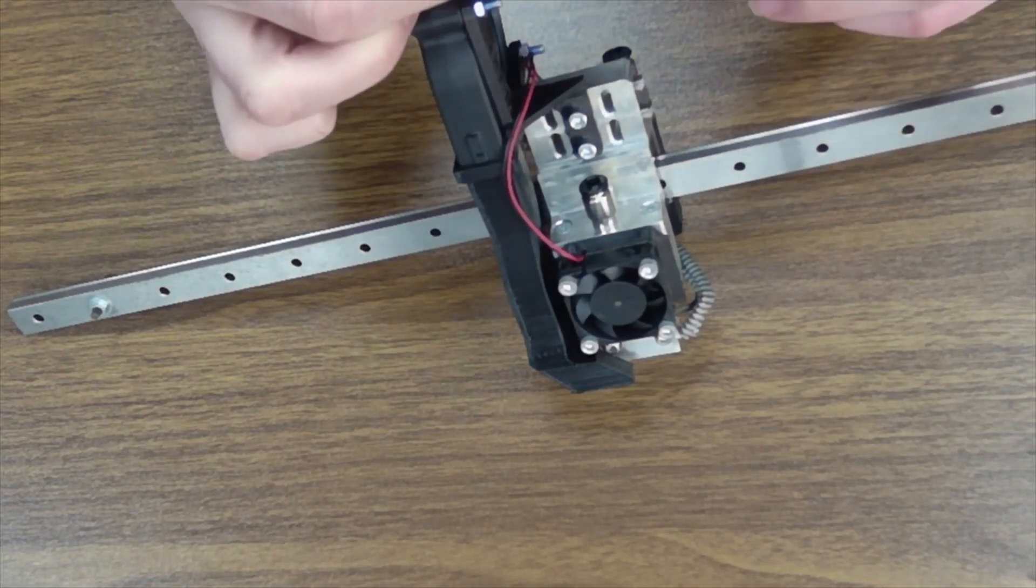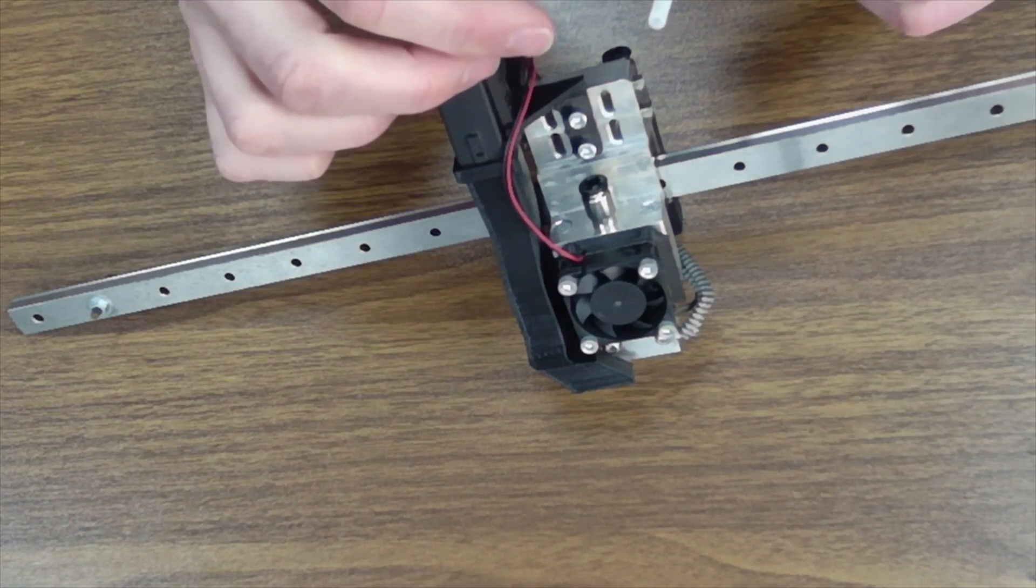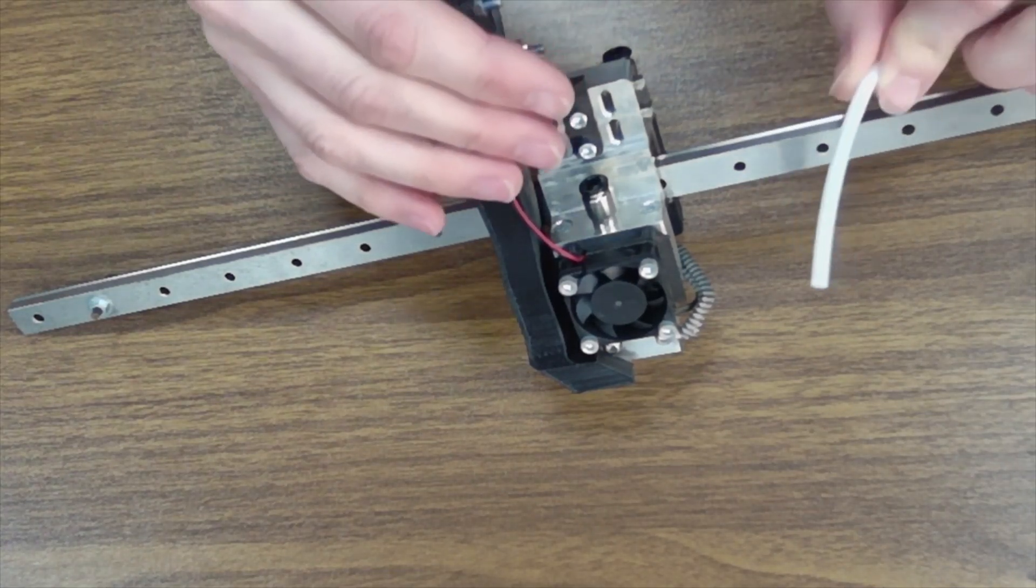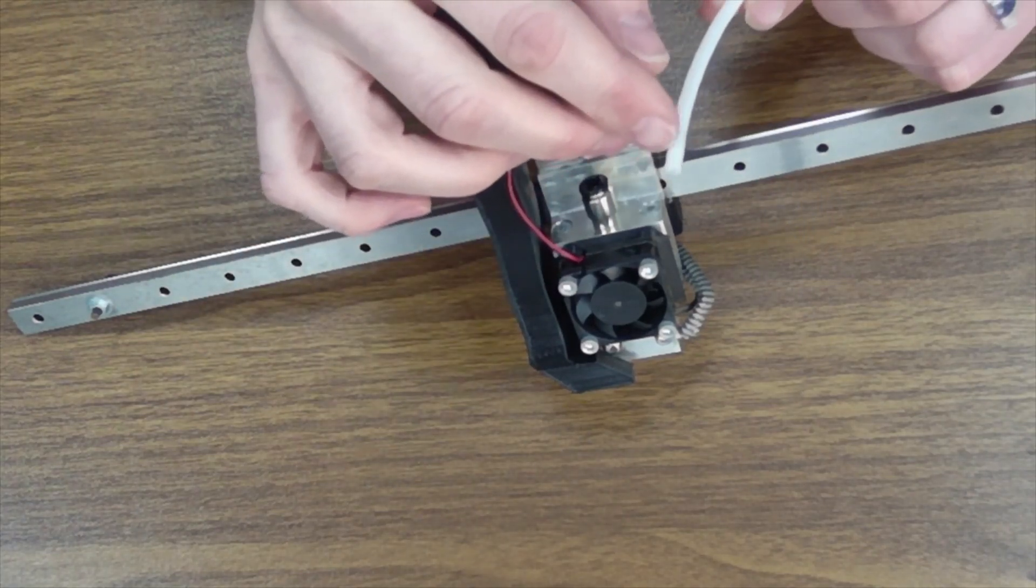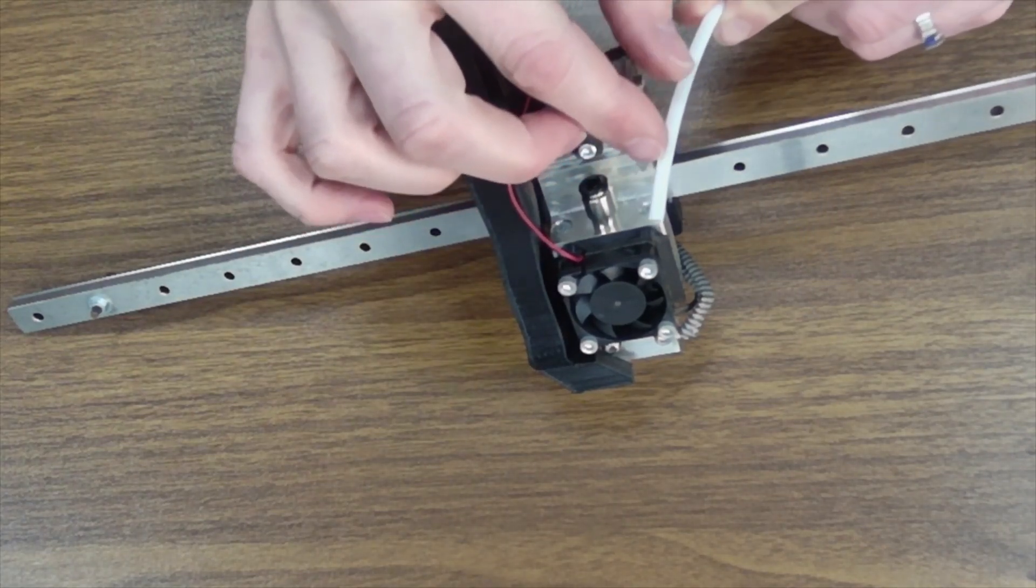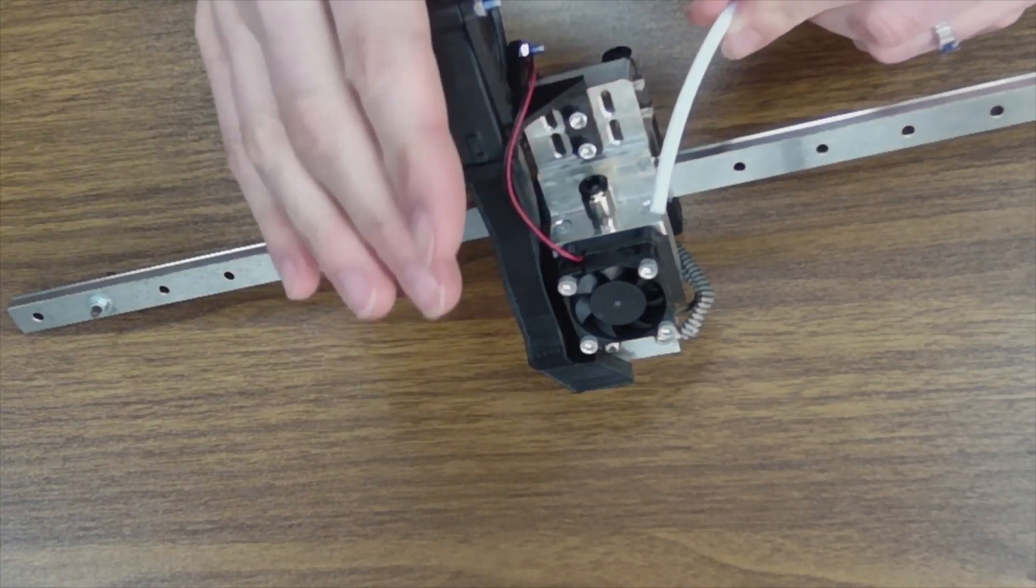Now important note, if your Bowden tube has been in use for any amount of time, you will want to either replace it or trim the end as we discussed in some of our other documentation. I'll do a quick aside here to talk about why.